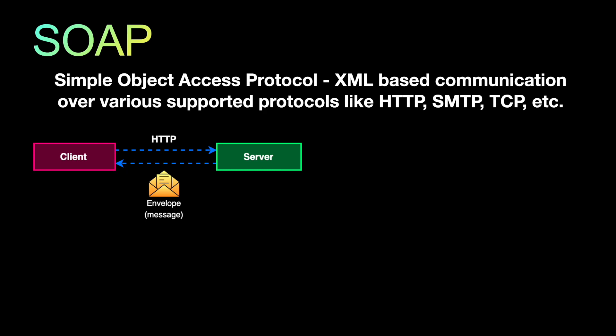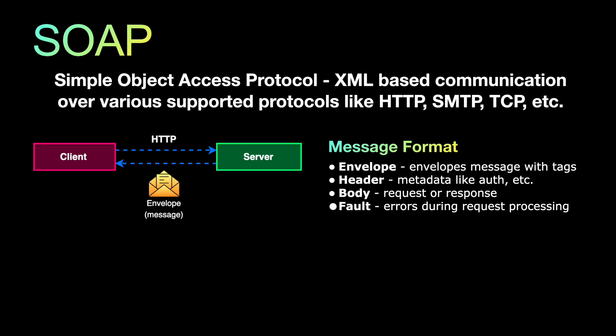The SOAP message format primarily contains four components. First is the envelope, which binds the message with tags and other data. Then there is the header, which is metadata of the request where you can provide authentication details, IP address, and client information. The body is the main request or response structure sent by the client to the service. Finally, there is the fault, which handles errors that occur during processing of the request.